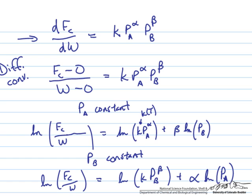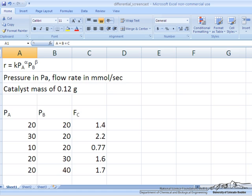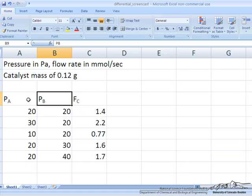And now let's go back to Excel and see how we can actually implement this. I'll show our data table here, shown right here. We've set the partial pressure of A and B, and measured the flow rate of C in the units that we've previously described. And you can see that in the first three data points, we're varying the partial pressure of A at a constant concentration of B, and measuring the flow rate of C out at those different conditions.